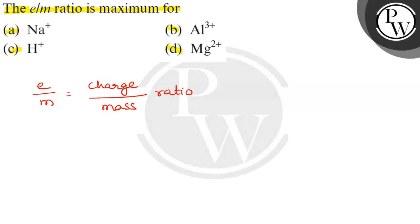This is e by m means charge to mass ratio. E hydrogen kui karenge first H plus. E is ka charge kitna hai? One positive charge hai. One by its ka atomic mass hydrogen one.